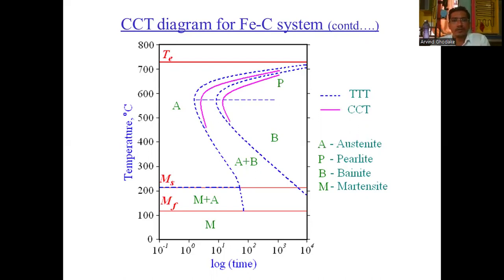The pink lines show the CCT cooling curve diagram. Here, A represents austenite, P represents pearlite, B represents bainite, and M represents martensite. This is the CCT diagram for the iron-carbon equilibrium system.